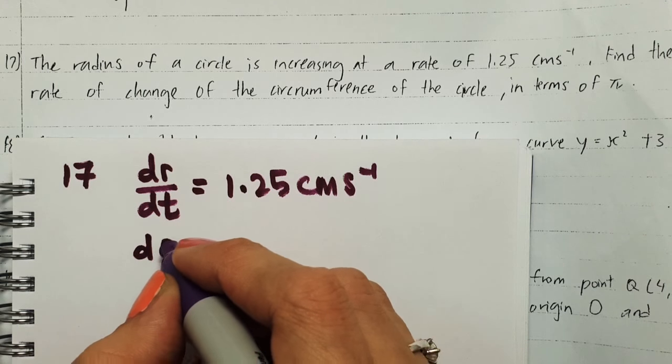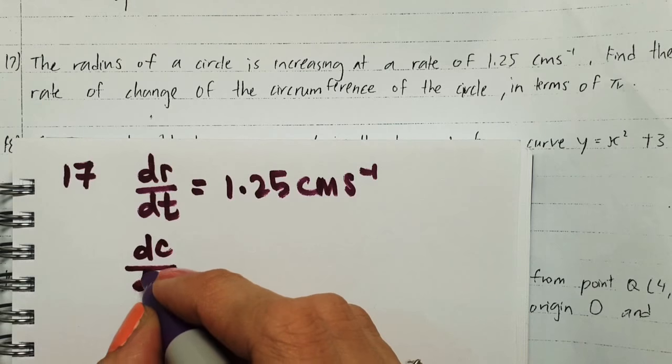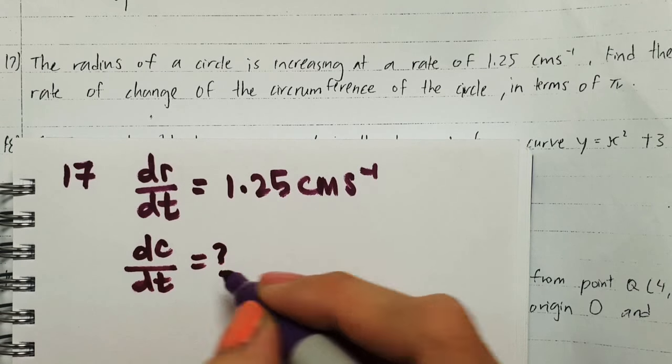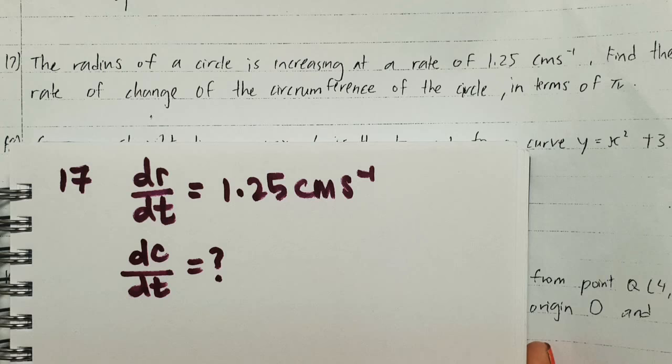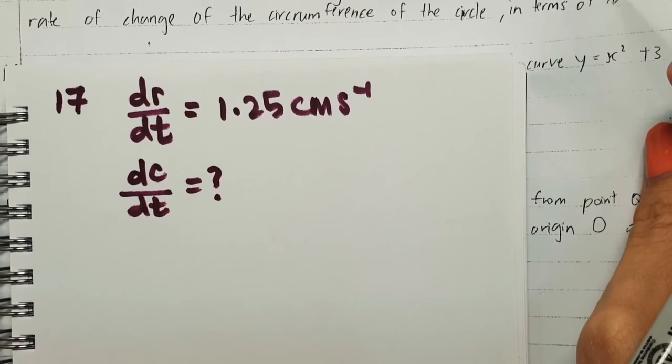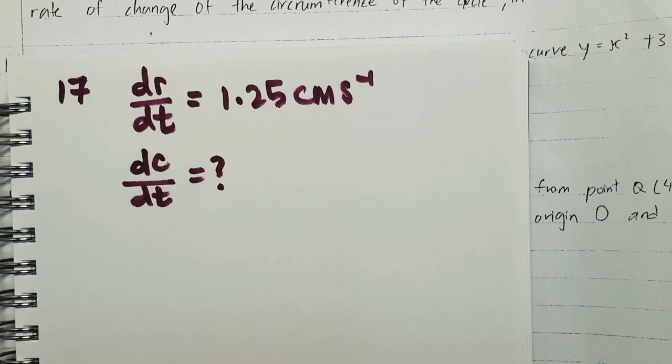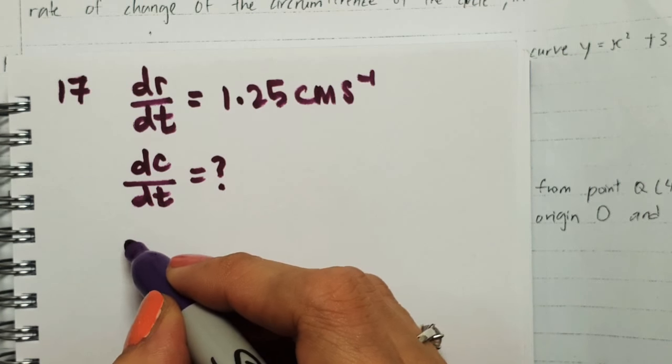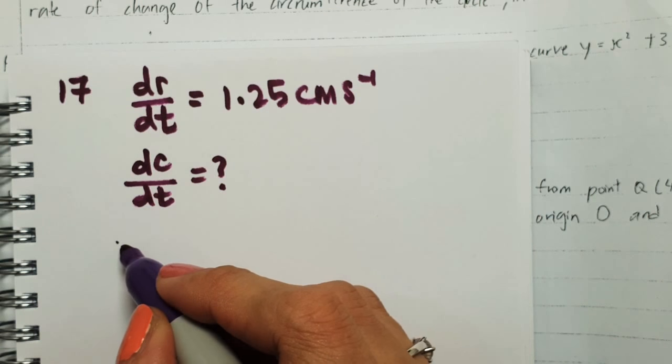Use C to represent circumference. We need to find this in terms of pi. Okay, let's find this one. So the thing that we want to find, let's change it. We want to...